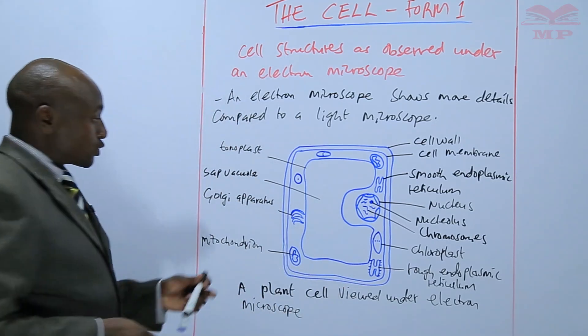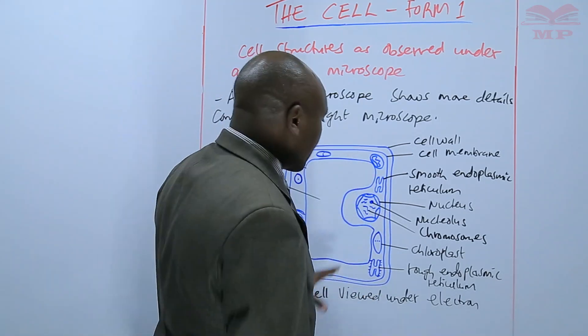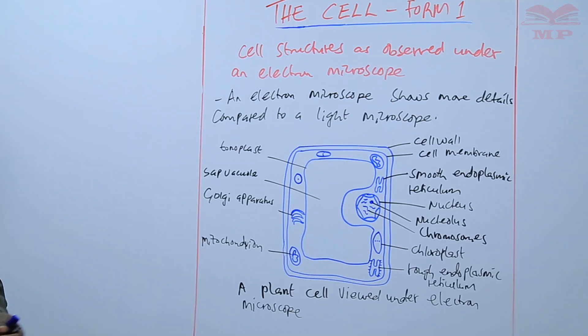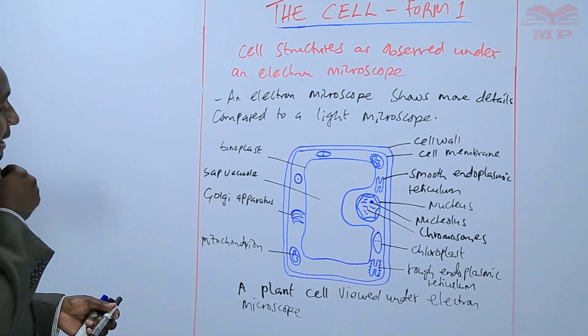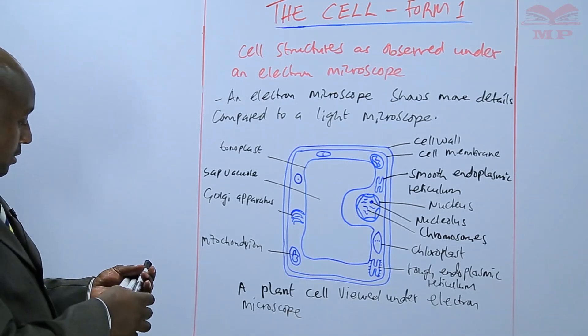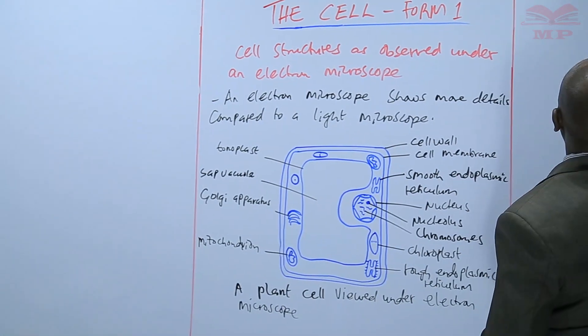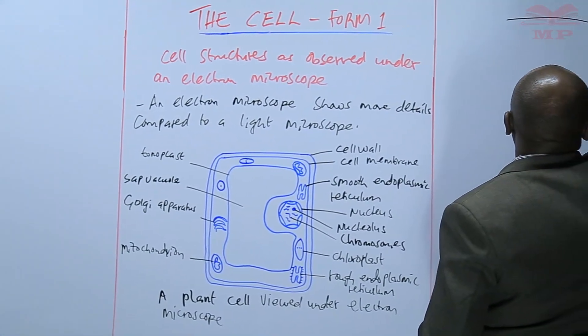So basically we can be able to view that there are so many structures that are observed under an electron microscope. We'll also have a diagram showing an animal cell showing more details.